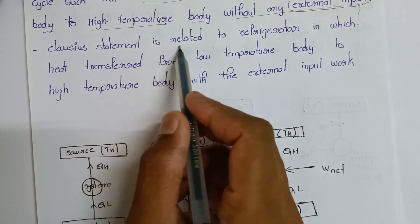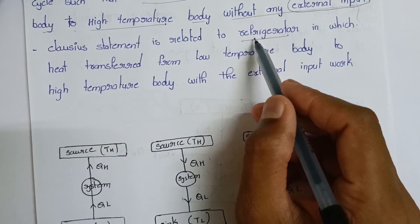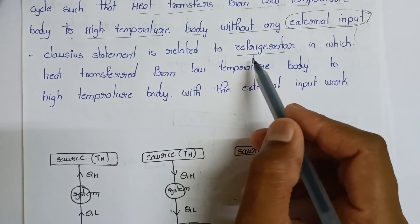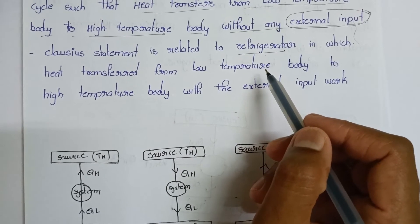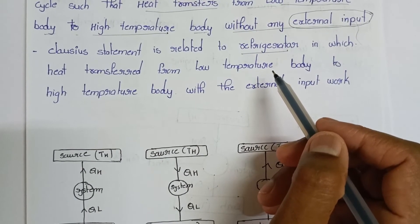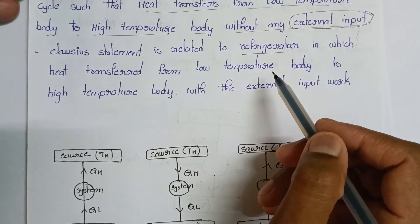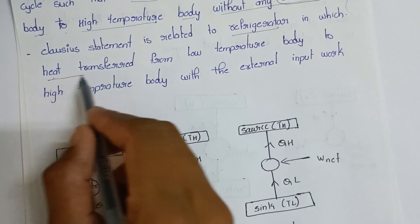Clausius statement is related to refrigerator. In a refrigerator, there is a low temperature body and high temperature body. Heat is transferred from low temperature body to high temperature body with external work input.